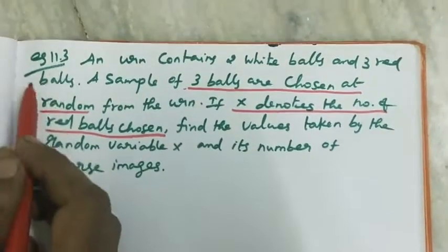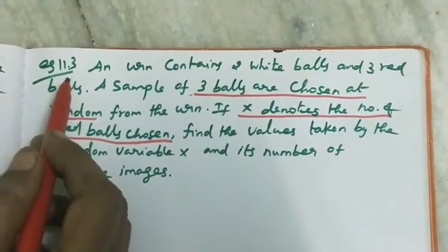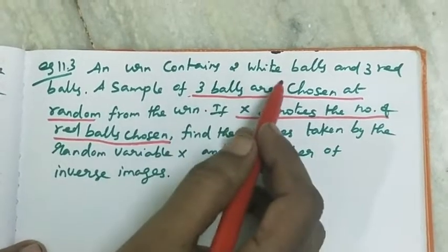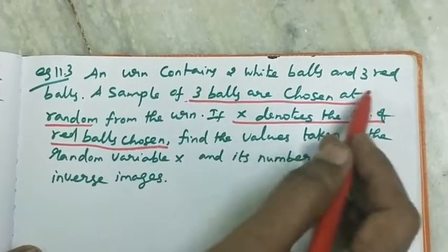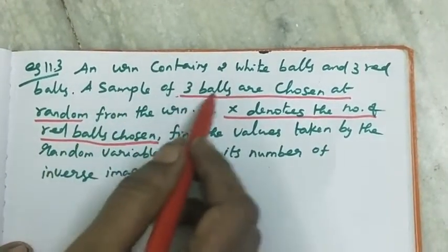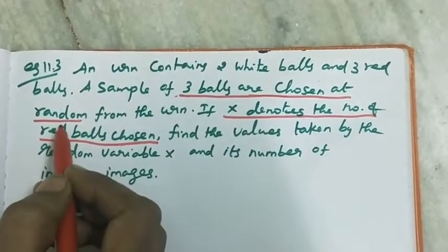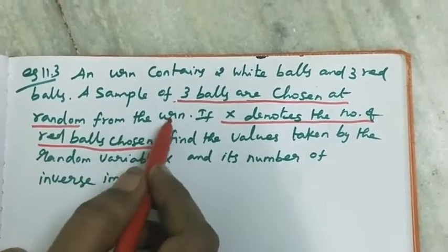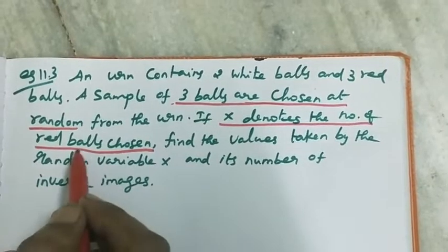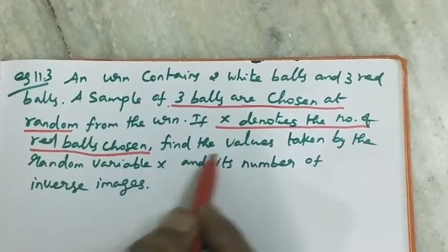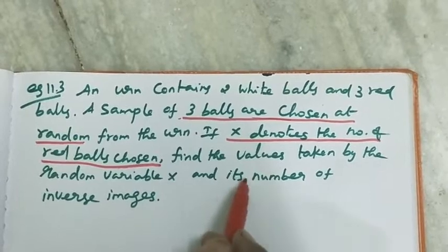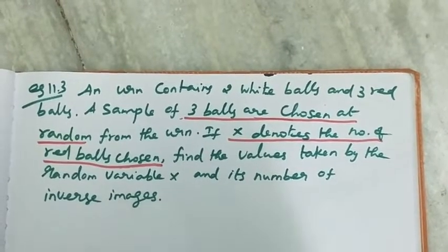Good morning students. Example 11.3. An urn contains 2 white balls and 3 red balls. A sample of 3 balls are chosen at random from the urn. If x denotes the number of red balls chosen, find the values taken by the random variable x and its number of inverse images.